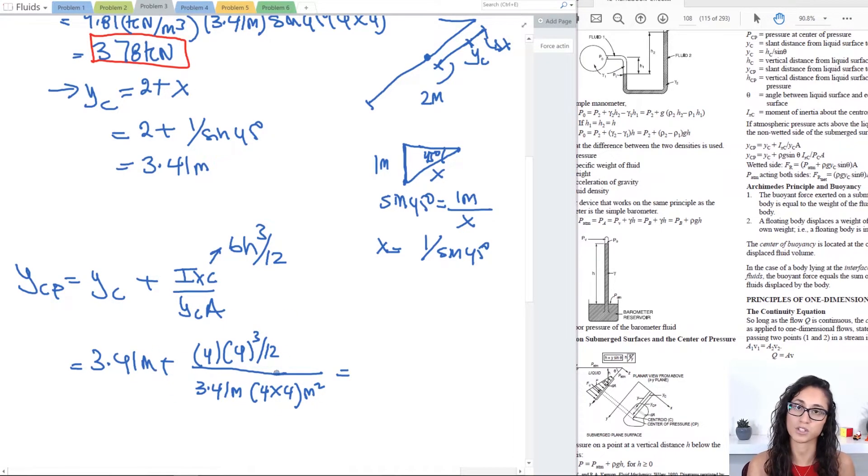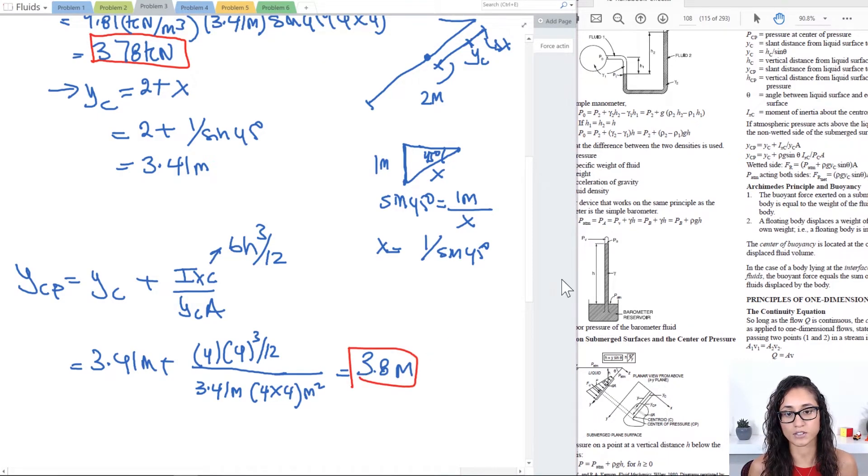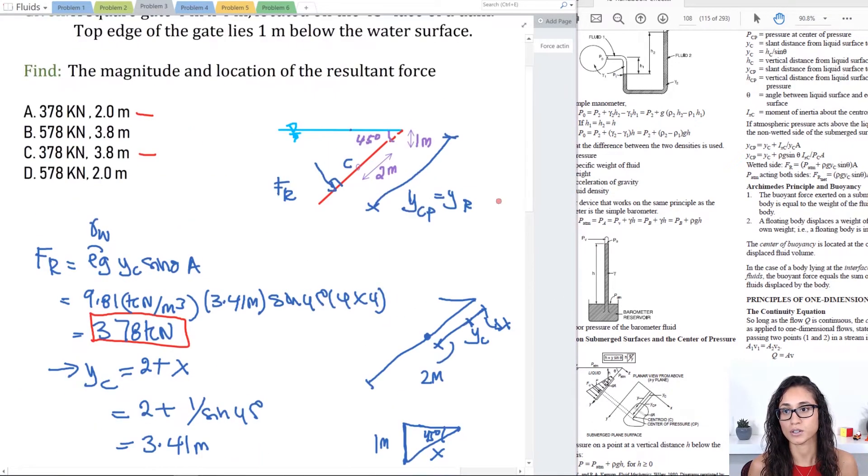Meters plus meters gives you meters. That's what we need because it's distance. We need an answer in meters. So this will give you an answer of 2.8 meters. So that is your answer and that's going to be answer C.